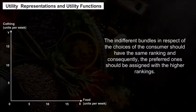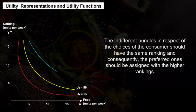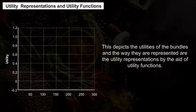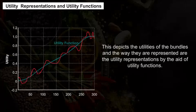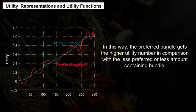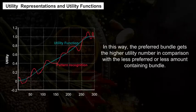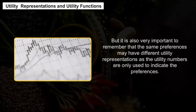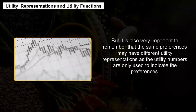Utility representations and utility functions: Indifferent bundles should have the same ranking, and more preferred bundles should be assigned higher rankings — this depicts the utilities of bundles and is represented through utility functions. The preferred bundle gets a higher utility number compared to less preferred bundles. It is important to remember that the same preferences may have different utility representations, as utility numbers are only used to indicate preferences.